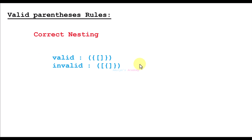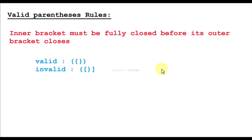Rule number 5: when brackets are nested inside each other, correct nesting is important. Brackets must close in the reverse order of how they were opened — the last opened bracket must be closed first. This is valid; this is invalid because the last-opened bracket was not closed first. Also, an inner bracket must be fully closed before its outer bracket closes. You cannot close the outer bracket before closing the inner brackets.